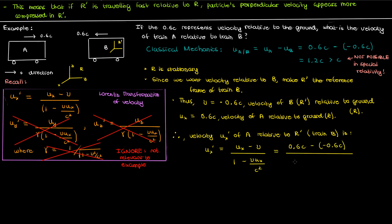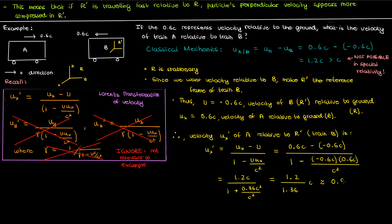Plugging in the numbers: the numerator is just 1.2c, while negative 0.6 times 0.6 is negative 0.36, and the negative of 0.36 is just positive 0.36. So if we simplify everything, we get 1.2 over 1.36 times c, which approximately comes out to 0.8824c. This is less than the relative velocity we got from classical mechanics, and it's also less than the speed of light, so it makes sense in the context of special relativity.